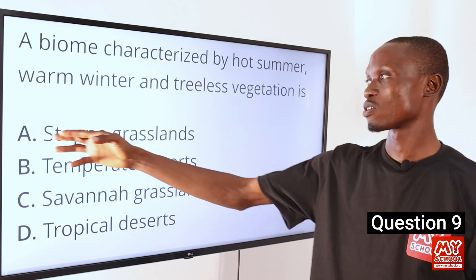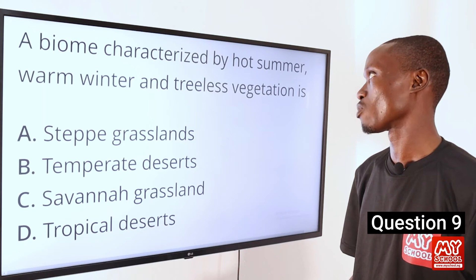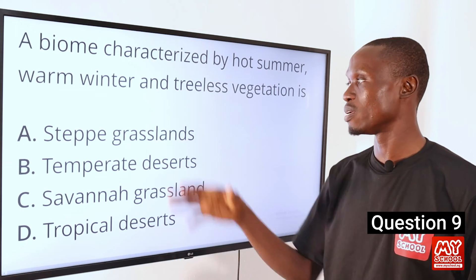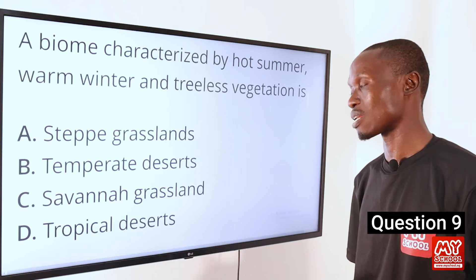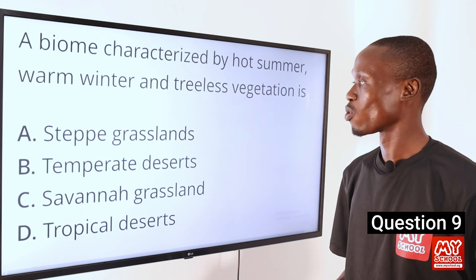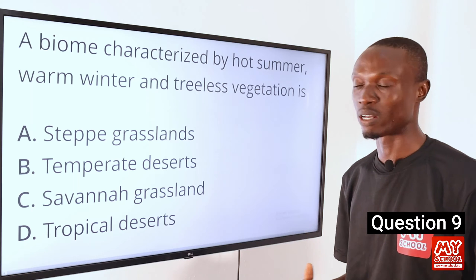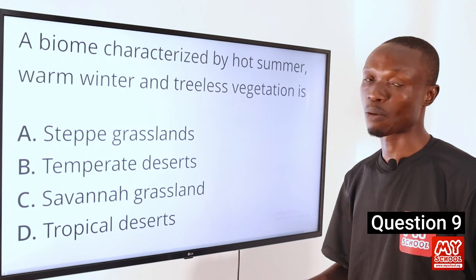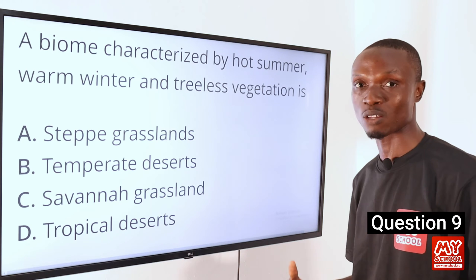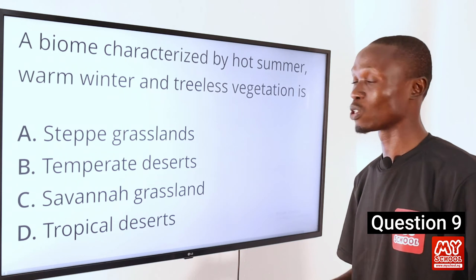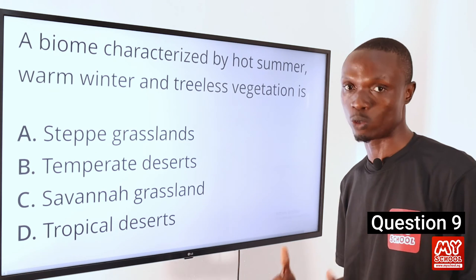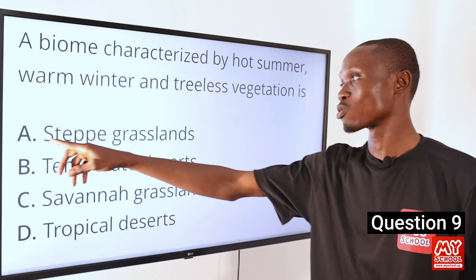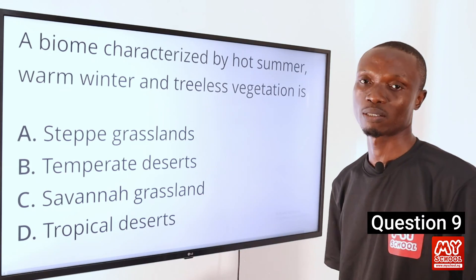The answer to question 9 is option A, steppe grassland. A steppe grassland is characterized by grassy plains with or without trees except those close to rivers and lakes. Summers can be hot with temperatures of about 40 degrees or more, but winters are usually cold with temperatures falling below freezing point. That makes option A, steppe grassland, the correct option.